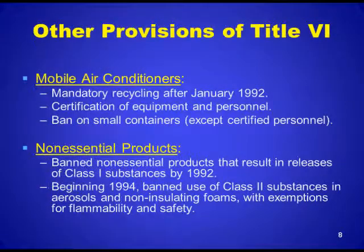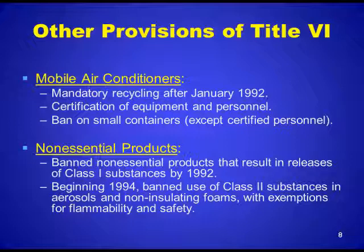Additional provisions of Title VI include provisions for mobile air conditioners: mandatory recycling after January 1992, certification of equipment and personnel that handle these air conditioners, and a ban on small containers except for certified personnel. Regarding non-essential products, they banned non-essential products that result in releases of Class I substances by 1992, and beginning in 1994, banned the use of Class II substances in aerosols and non-insulating foams with exemptions for flammability and safety.